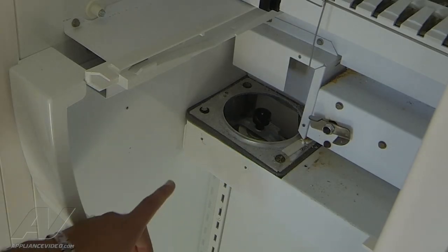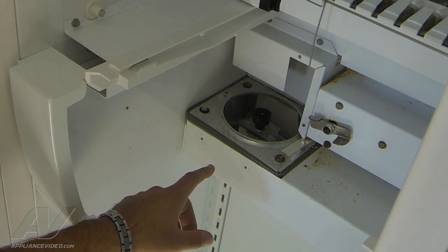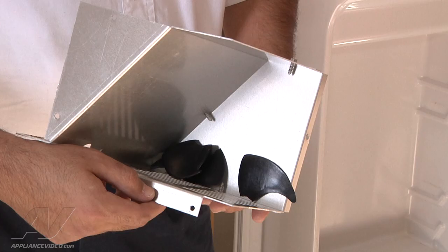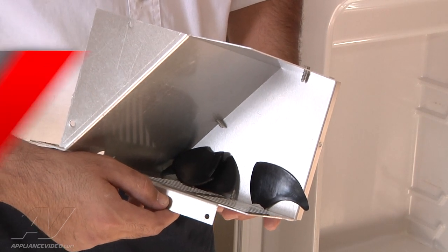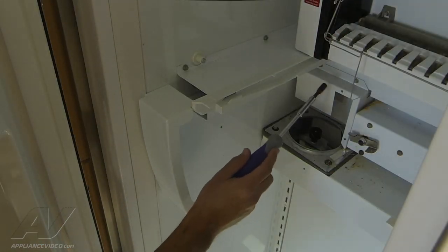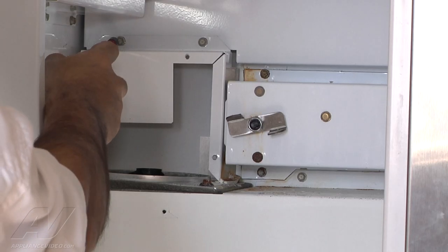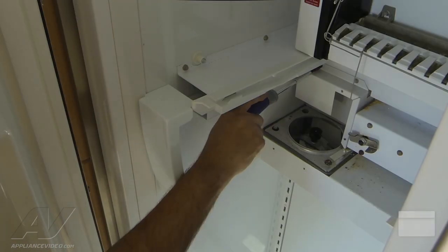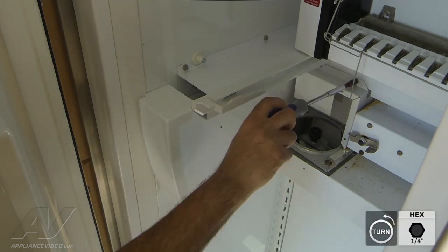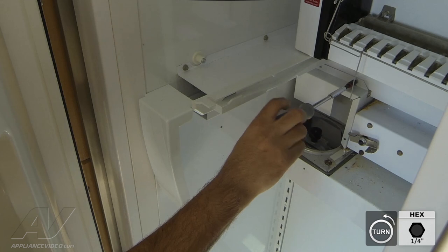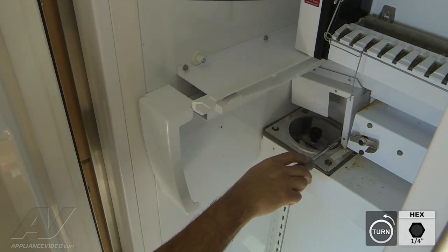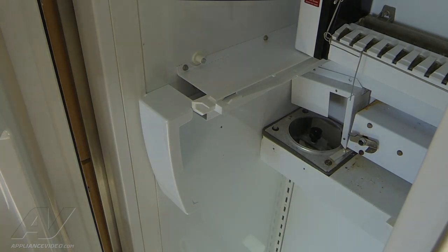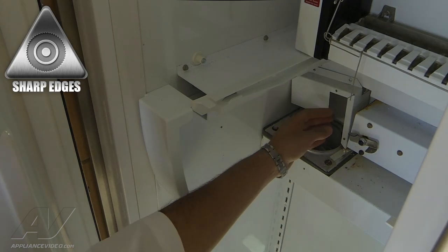As you can see right here, this is the evaporator fan blade and motor assembly with the bracket. The fan blade is at the top and it's broken. The actual pieces though are in the cover we just removed. Next we're going to remove the smaller cover here. You can see the quarter inch screws: one, two, and then three. Once the three screws have been removed, we can easily just pull the panel right out.